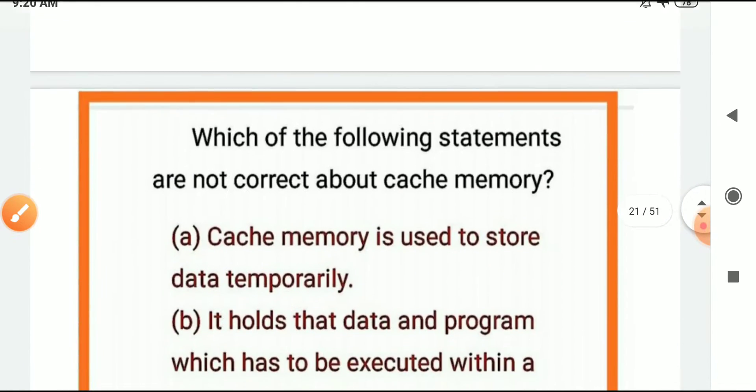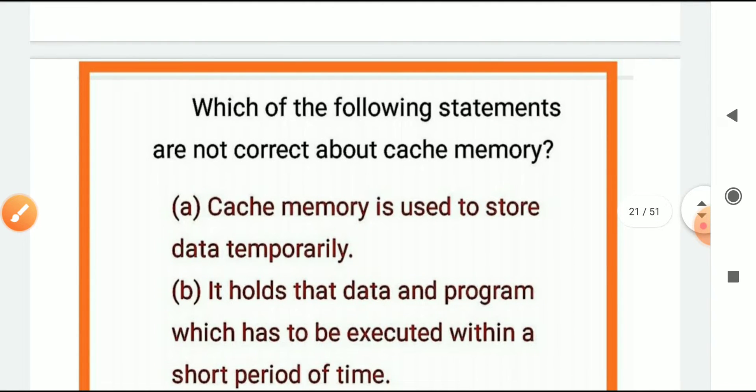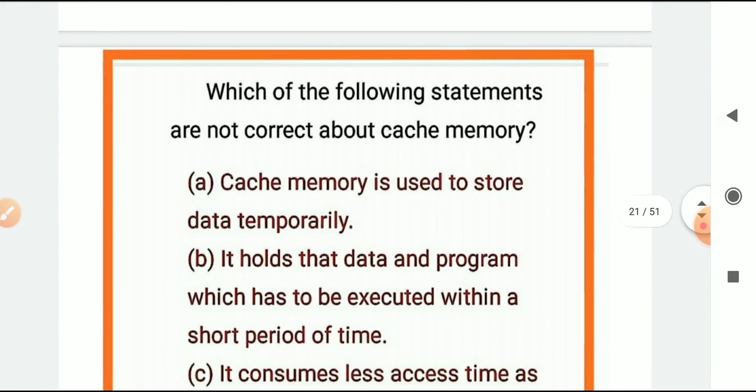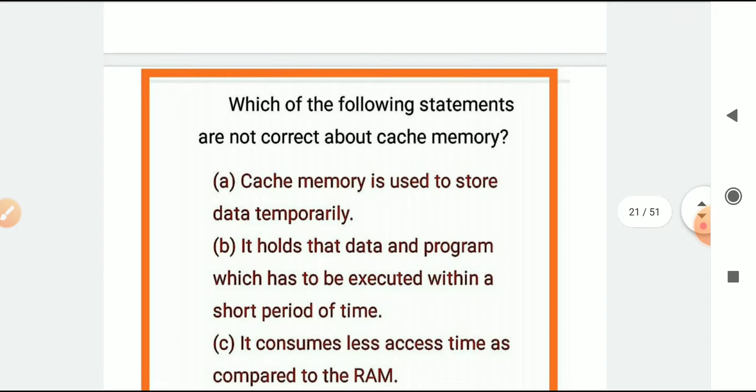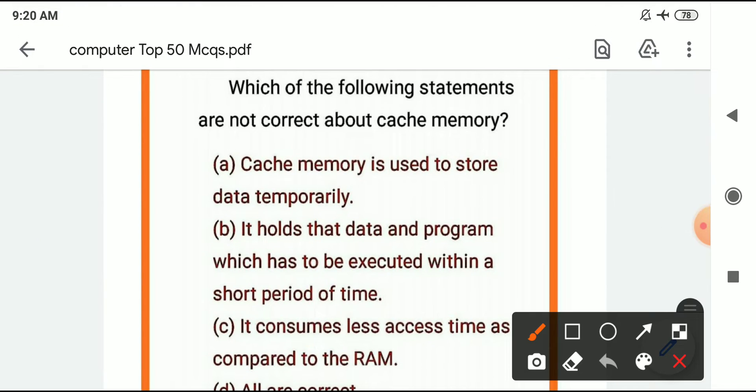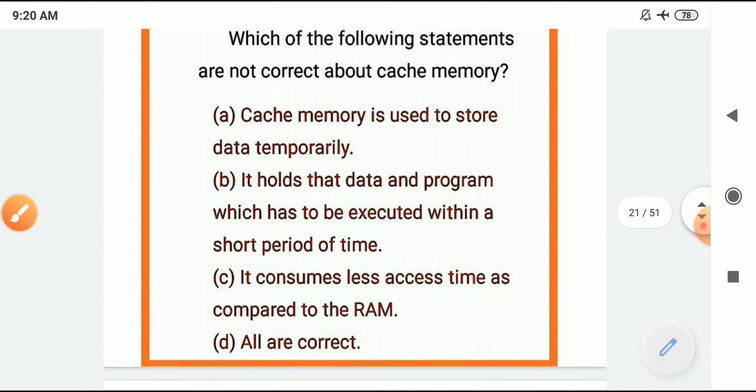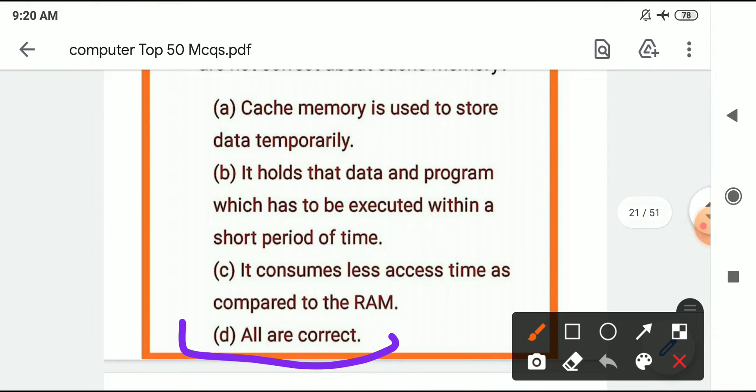Which of the following statements are not correct about the cache memory? The cache memory is used to store the data temporarily. It holds that data and program which is executed within a short period of time. It consumes less access time as compared to the RAM. All are correct about the cache.